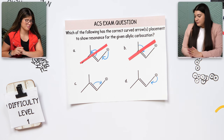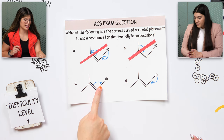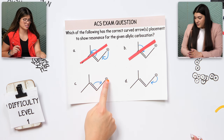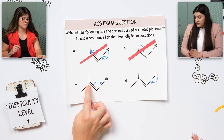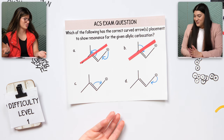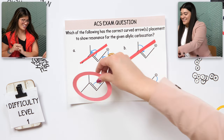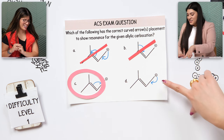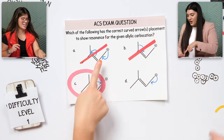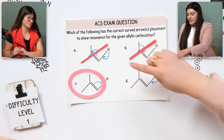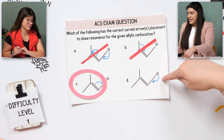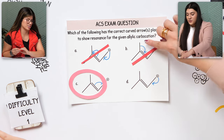What about C? I would say you could do that one because if you were to move that, it would make this carbon neutral. And then right here you would have a positive — you'd still keep the same positive charge overall. I'd say this is the correct one. You're correct. And D has the same problem as A — there are no electrons to move from a positive charge. Do not break single bonds.